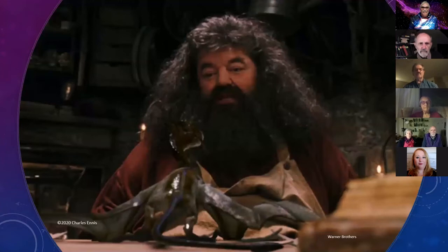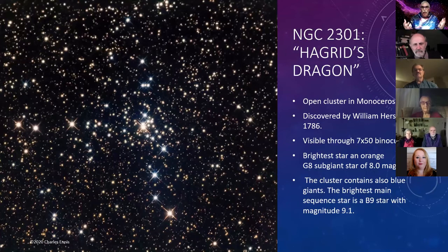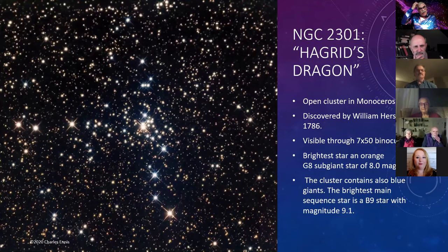Does everybody know who Hagrid and his dragon are? In the sky, there are all kinds of open clusters, and some of them resemble things — people look at them and see a bird, a boat, whatever. Over time, the names change. NGC 2301 is an open cluster in the constellation Monoceros, originally called Copeland's Golden Warmth, then the seabird cluster. But then some astronomers who happen to be fans of J.K. Rowling looked at it and said 'that's Hagrid's dragon' — and that's now what many people call the star cluster. You can see it for yourself with 7x50 binoculars. It was first discovered by William Herschel in 1786 and has a whole bunch of beautiful different-colored stars.